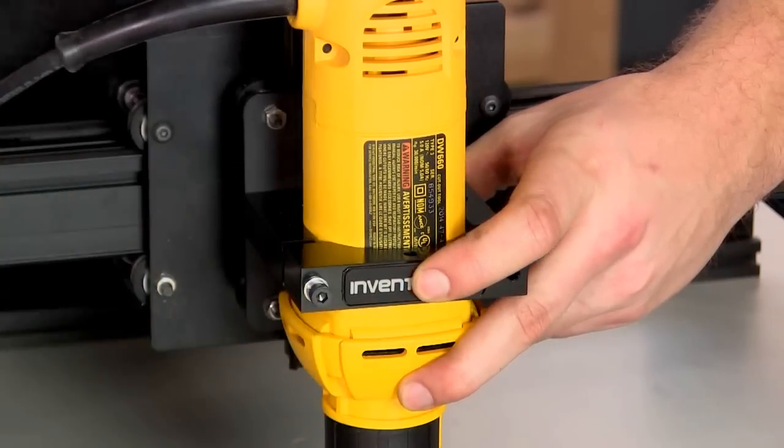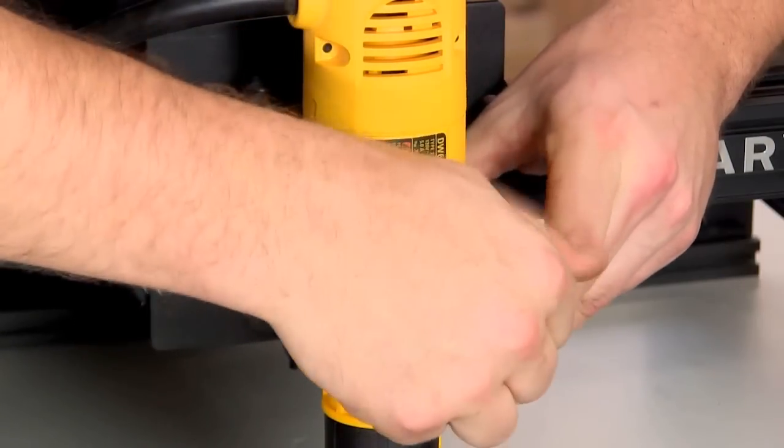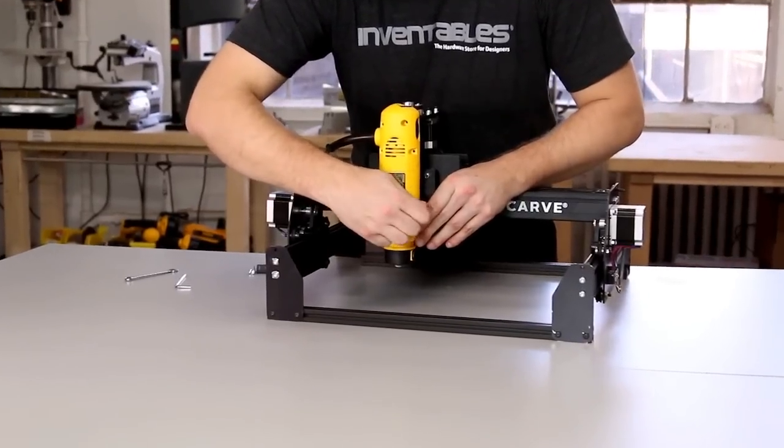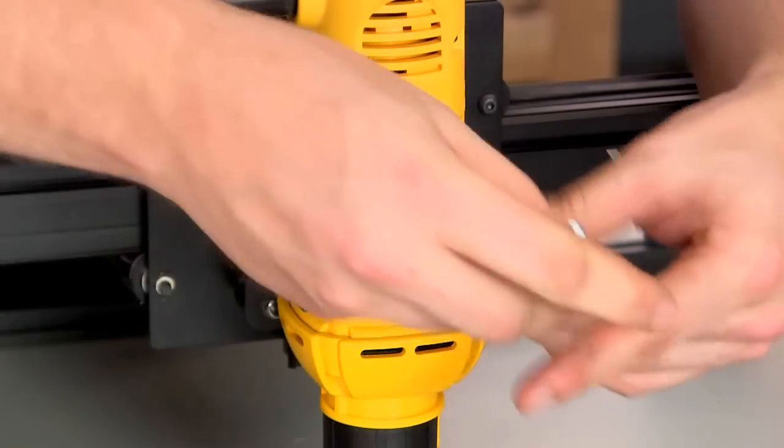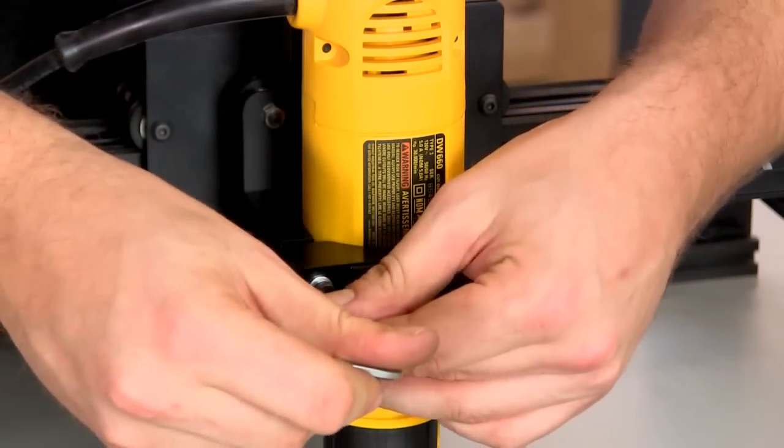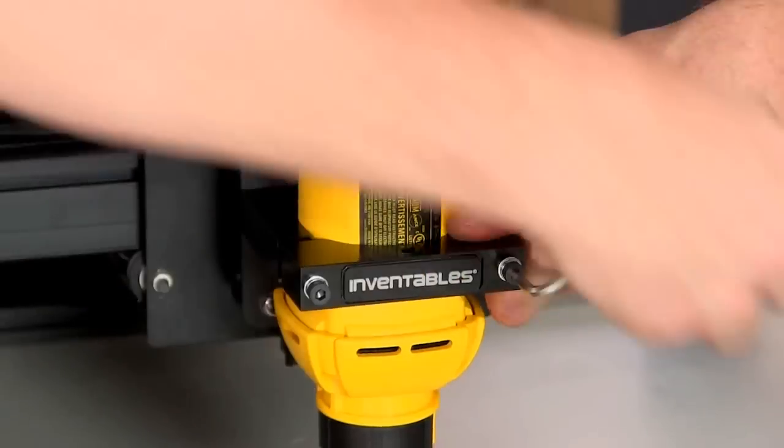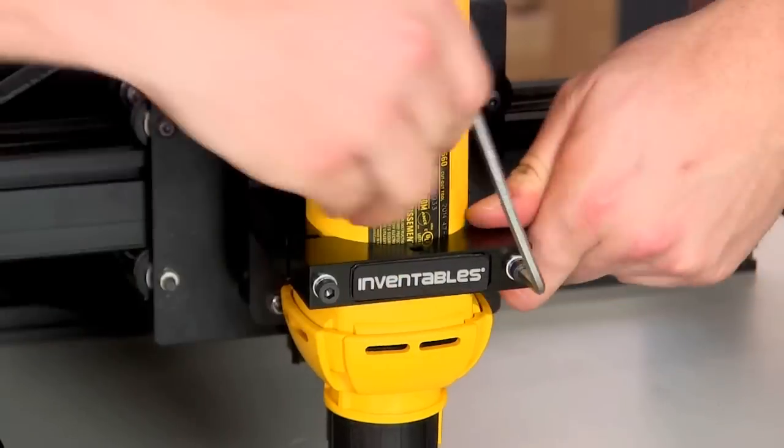Tighten them down finger-tight first, and then evenly with the wrench, alternating screws until both are as tight as you can get them.